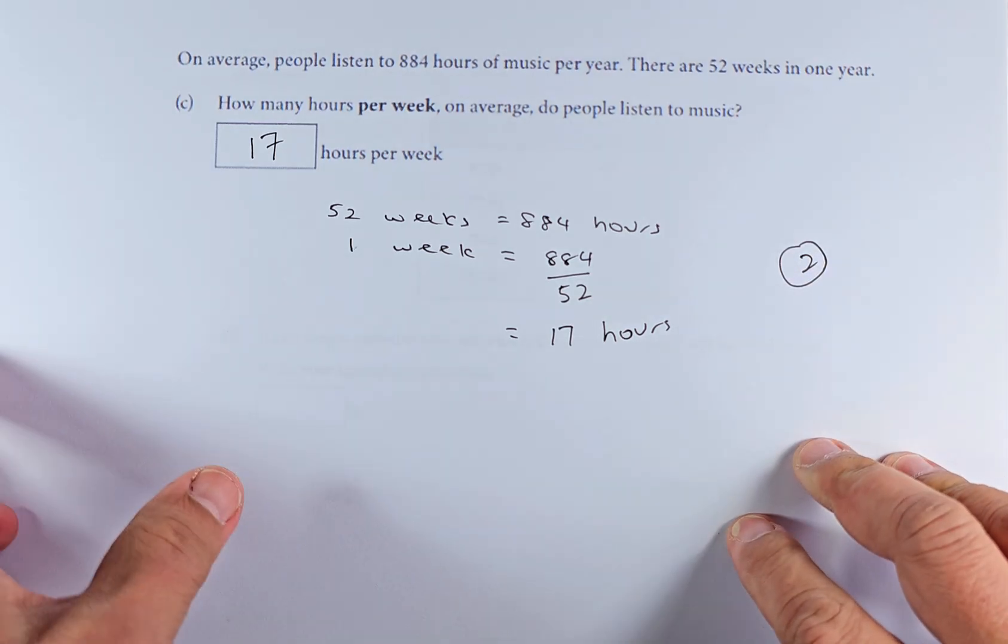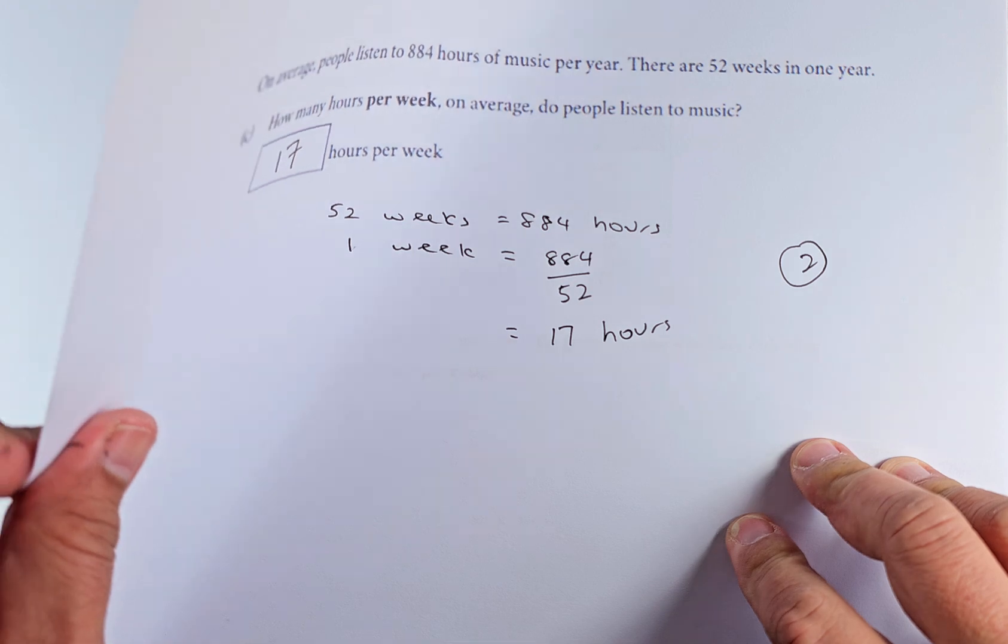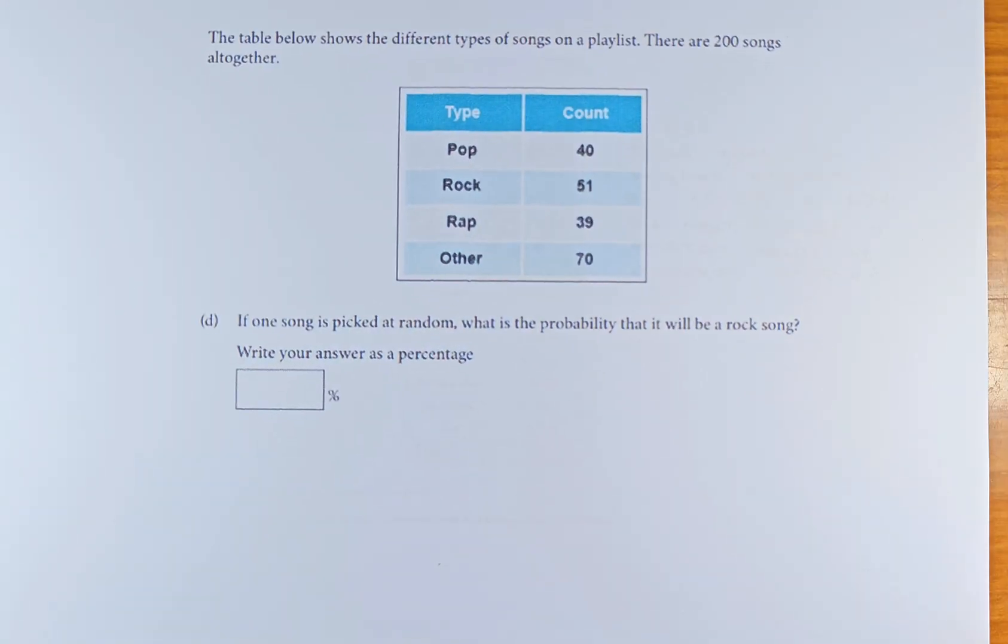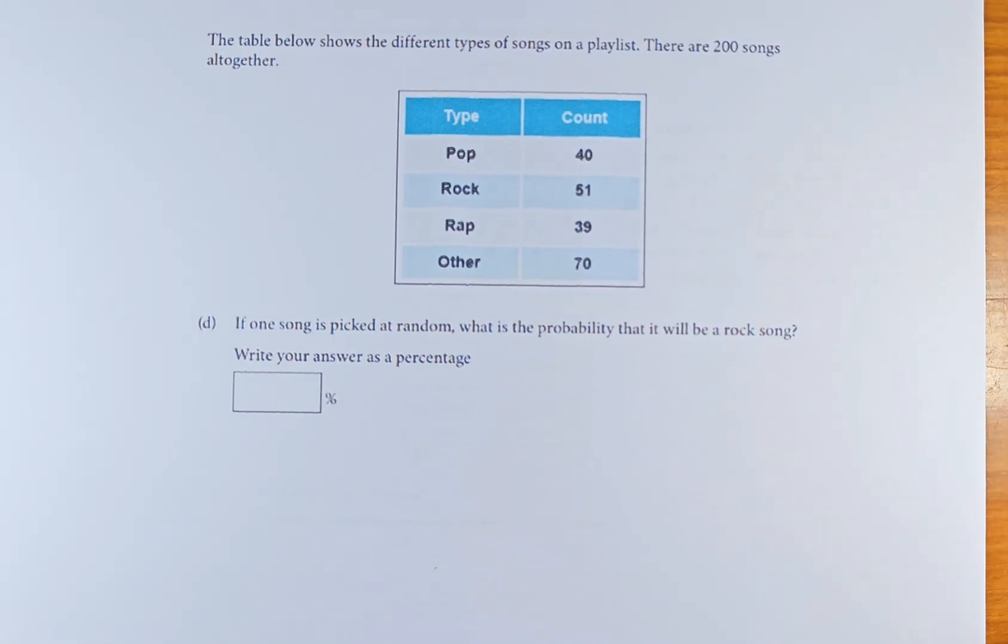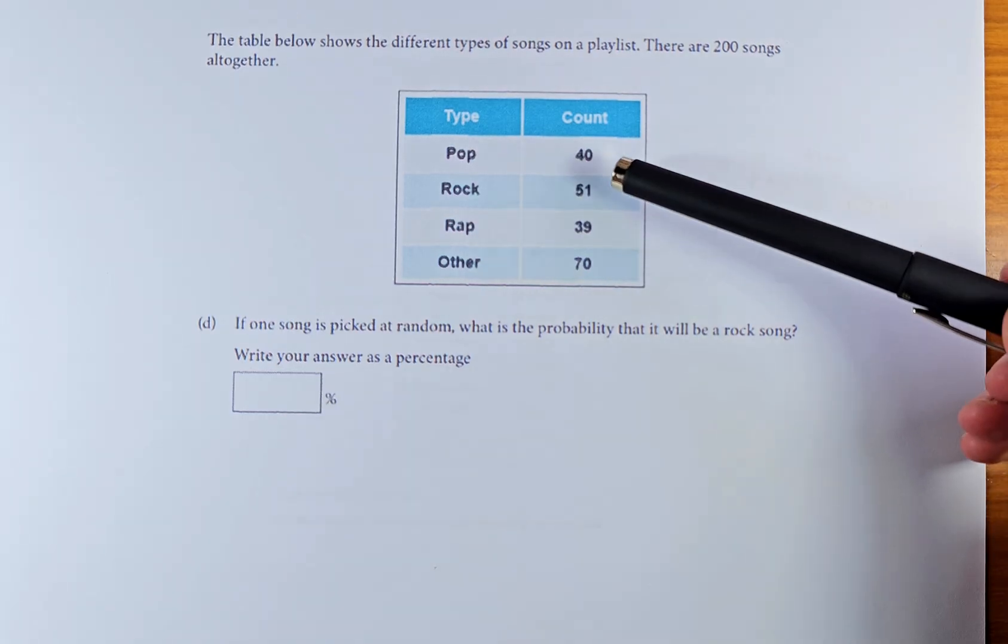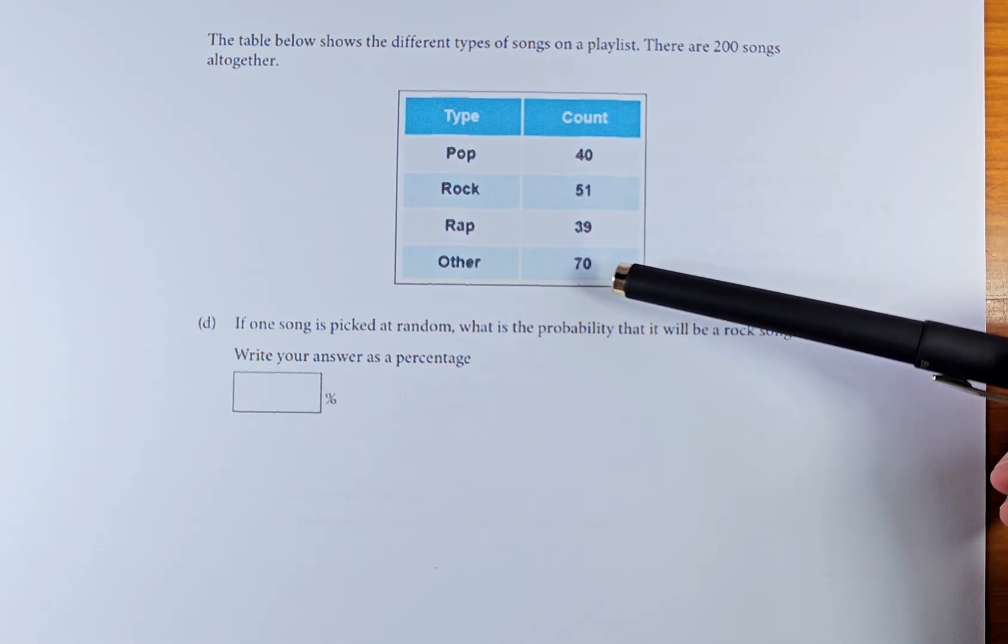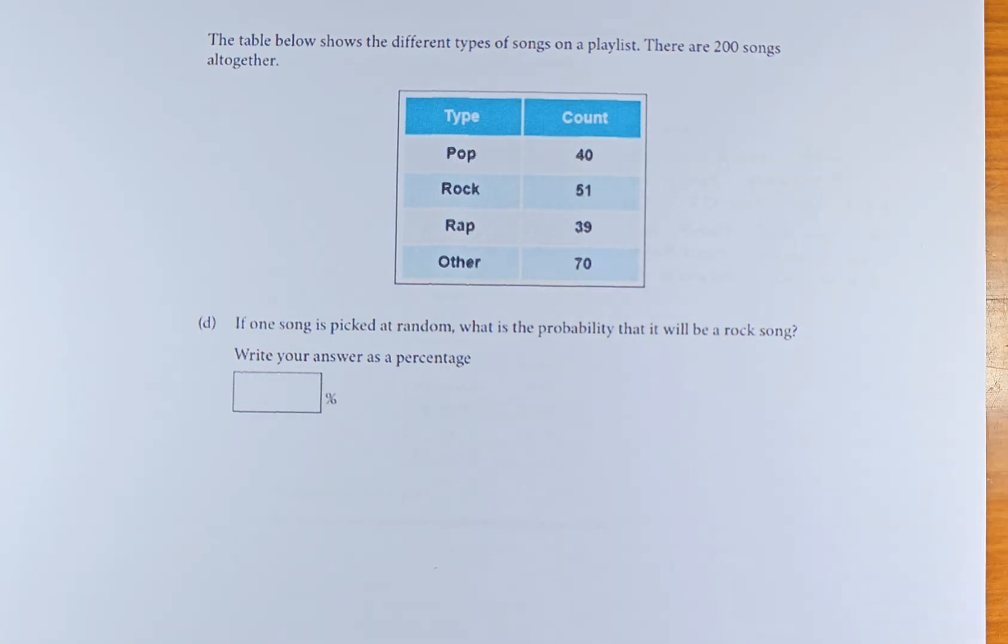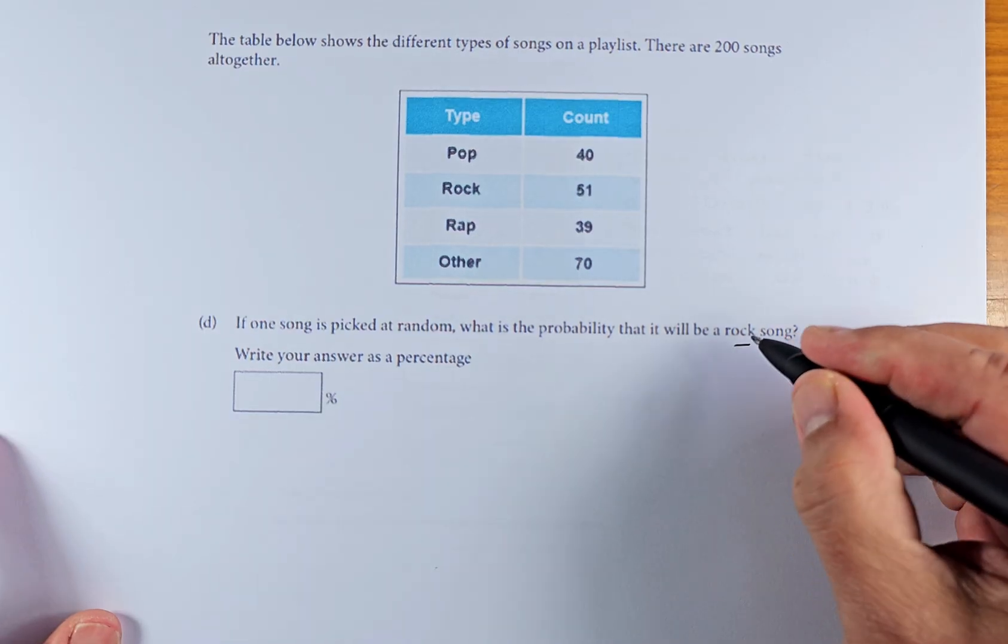Great. Now we shall do question 4, part D. This is a probability question and we shall read together. The table below shows the different types of songs played on the playlist. There are 200 songs altogether. If you add pop, rock, rap and others, they add up to 200. If one song is picked at random, what is the probability that it will be a rock song?